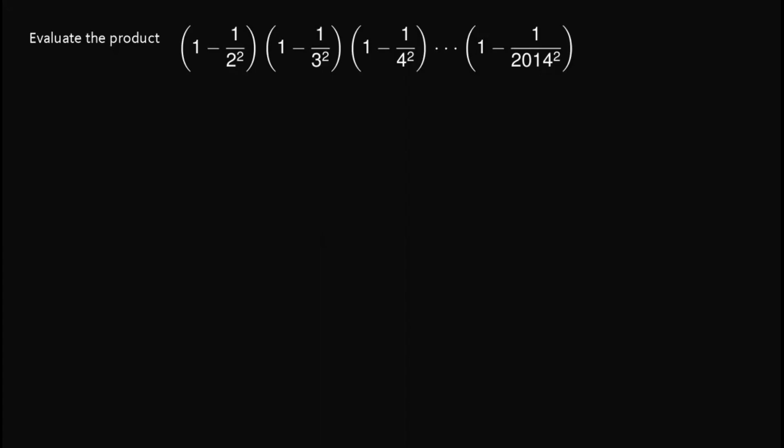Hi there, for this video we'll be solving another problem that involves algebra. We are given: evaluate the product of (1 minus 1 over 3 squared) up until (1 minus 1 over 2014 squared). This problem is quite tricky but there are several steps that we can do to get the answer.